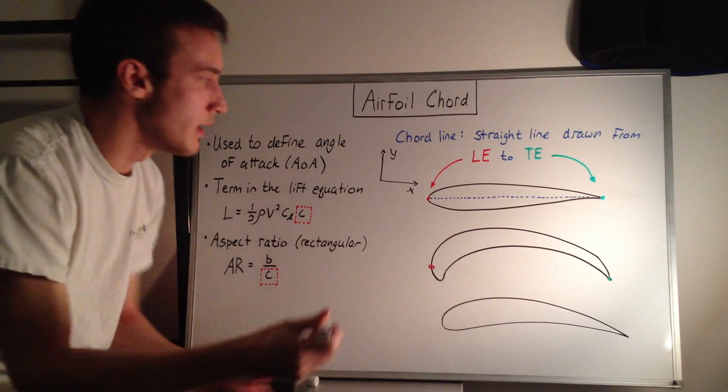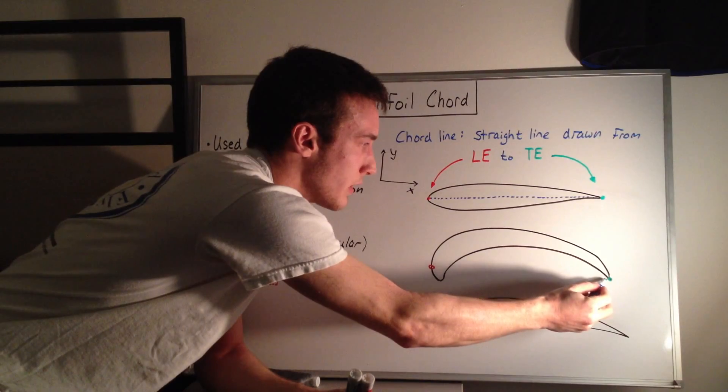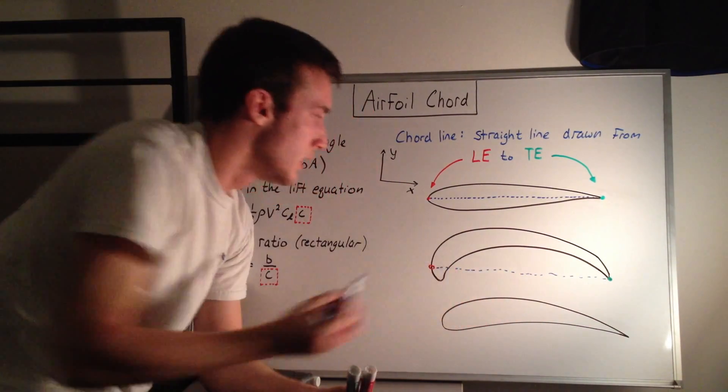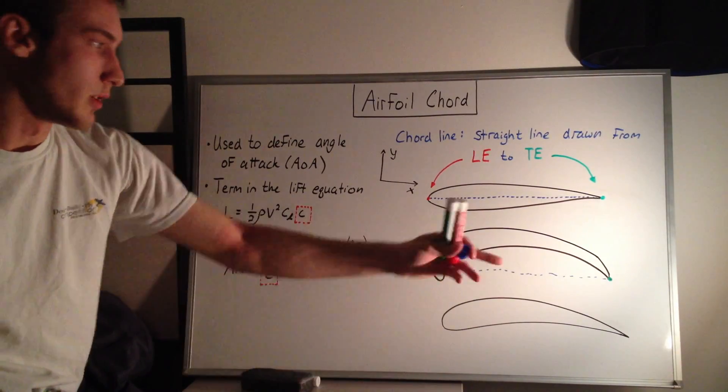if you define it this way, the cord line would be a straight line from the trailing edge. It's kind of hard to draw a straight line here, but up to the leading edge like that, or leading edge to trailing edge.